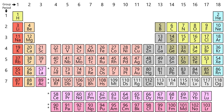The periodic table of elements, usually shortened to just the periodic table, is a tabular arrangement of the chemical elements ordered by their atomic number, electron configuration, and recurring chemical properties, whose structure shows periodic trends. Generally, within one row the elements are metals to the left and non-metals to the right, with elements having similar chemical behaviors placed in the same column. Table rows are commonly called periods and columns are called groups.